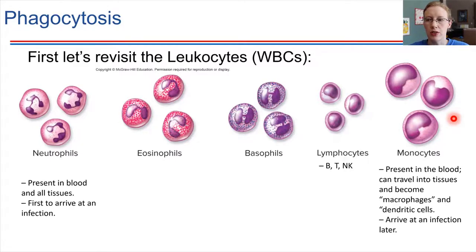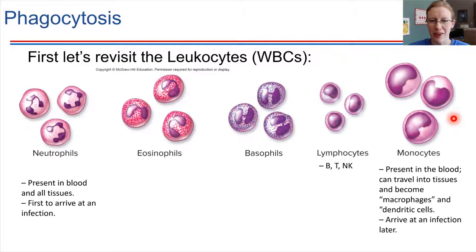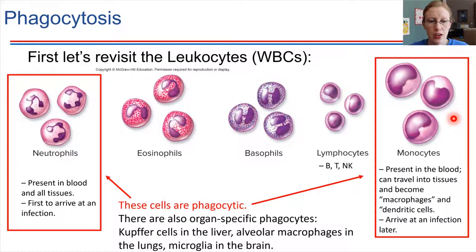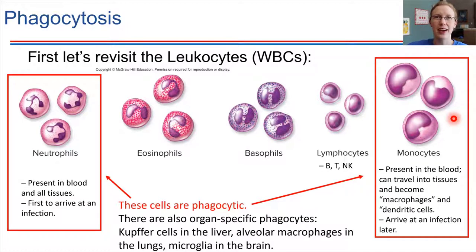In terms of phagocytosis, some of these cells are capable of phagocytosis and others are not. The ones we're going to focus on right now, since we're talking about phagocytosis, are just the neutrophils and the monocytes — these are cells that are capable of phagocytosis. They can form pseudopodia and actually engulf other things. That being said, there are other types of phagocytic cells as well.